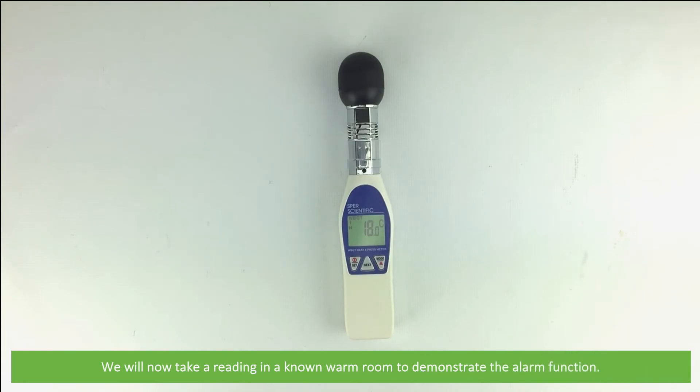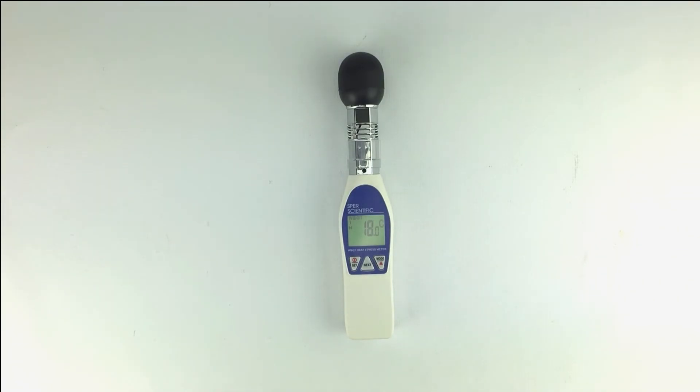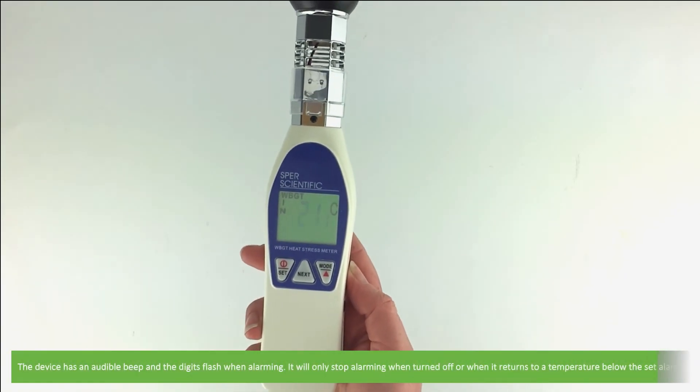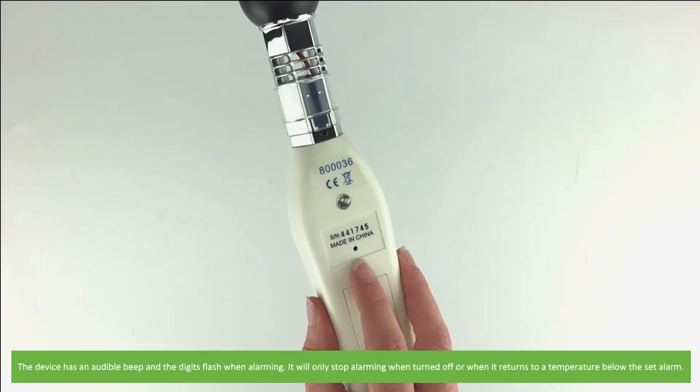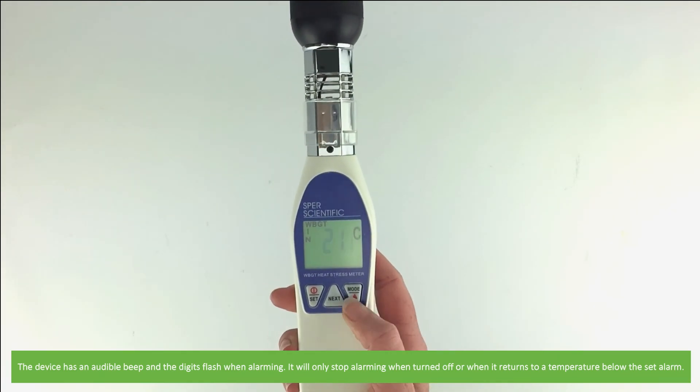We will now take a reading in a known warm room to demonstrate the alarm function. The device has an audible beep and the digits flash when alarming. It will only stop alarming when turned off or when it returns to a temperature below the set alarm.